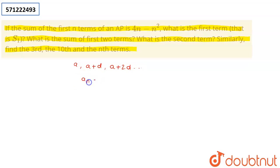And the nth term of this AP is given by a plus (n minus 1) into d. Now, in this particular problem, I am given that the sum of the first n terms of the AP is 4n minus n squared.